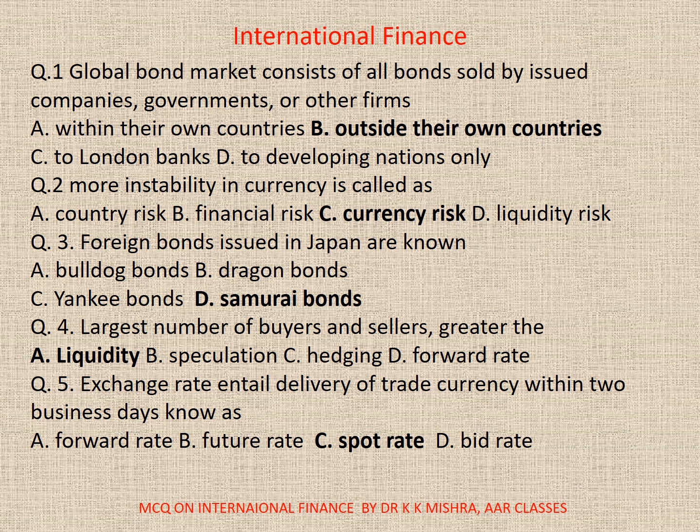Question number two. More instability in currency is called as: A. Country risk. B. Financial risk. C. Currency risk. D. Liquidity risk. Correct option is C. Currency risk.